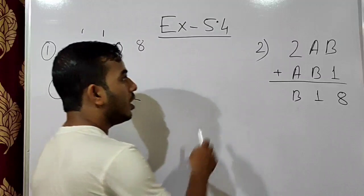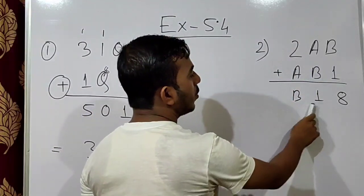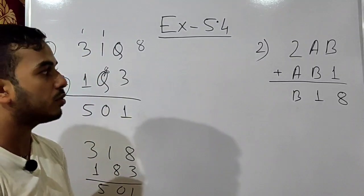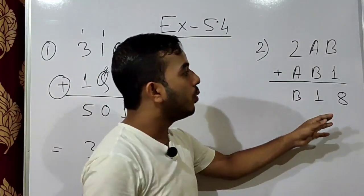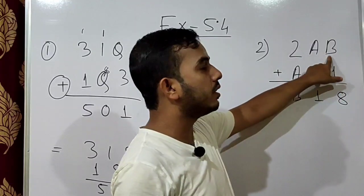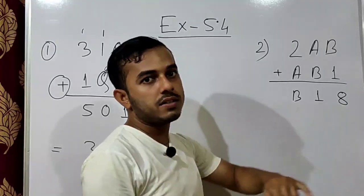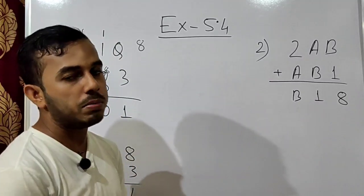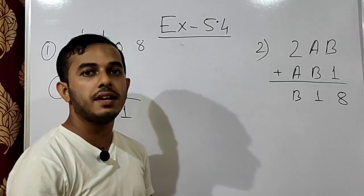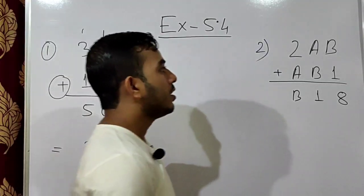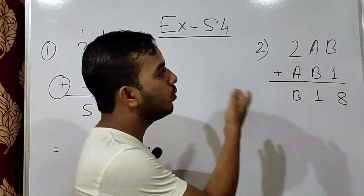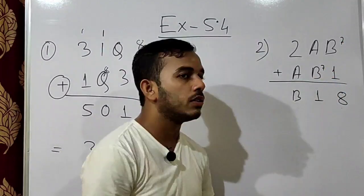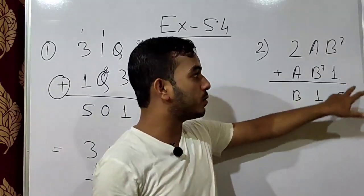Next question: 2AB plus AB1 equals B18. We have to find the value of A and B. The sign is plus. With which number added to 1 do we get a result with unit digit 8? One possibility is 7, since 7 plus 1 is 8. So if we replace B with 7, here also B must be 7.